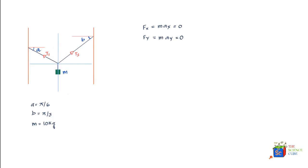Tensions T1 and T2 are pulling forces neutralizing the downward force of gravity acting on mass M. By geometry, the angle at the junction is also A. One horizontal force is T2·cosB, and another horizontal force is T1·cosA, but acting in the opposite direction, so it is written as negative.